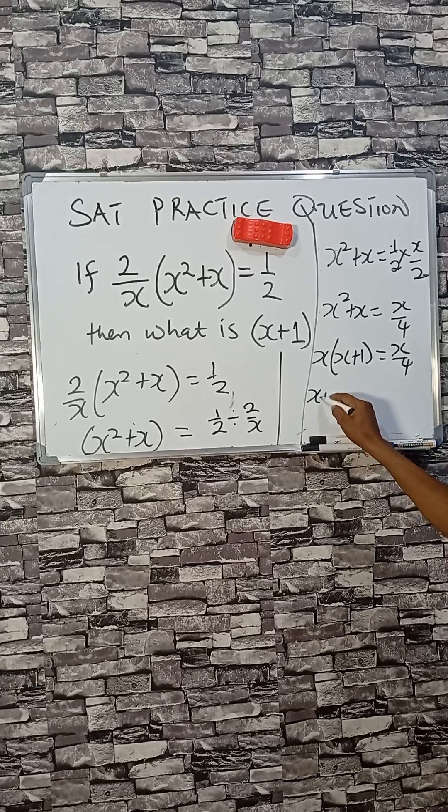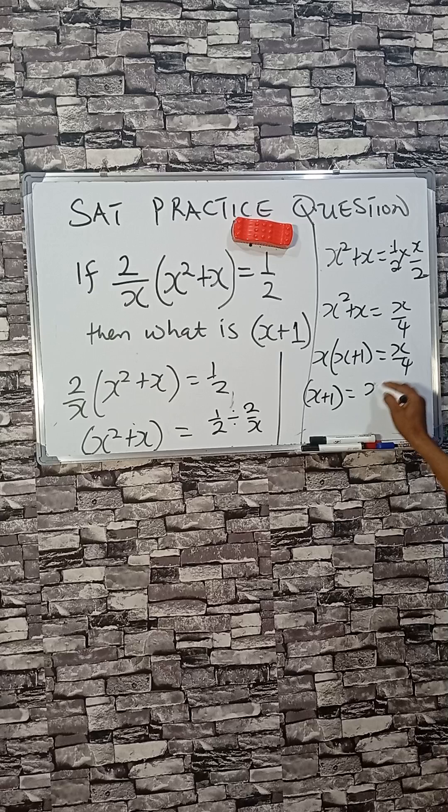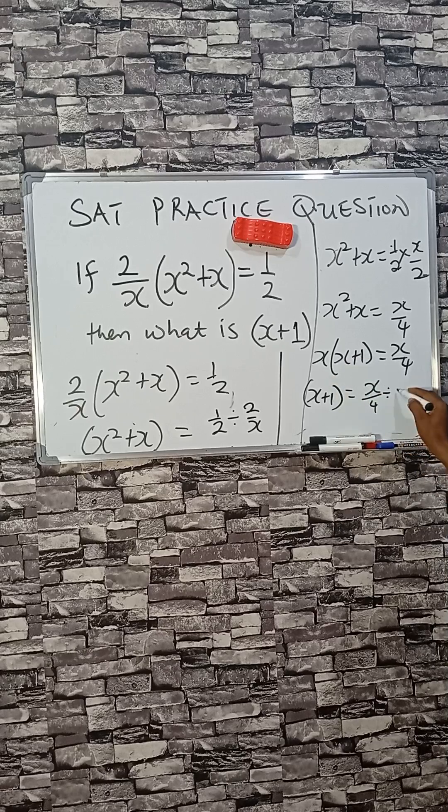So from here, x plus one - now that is what you're looking for - is now x over four, divided by x.